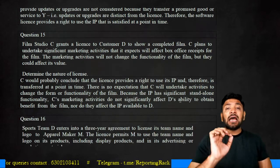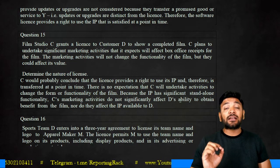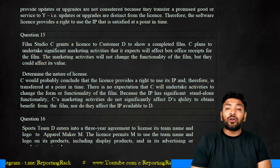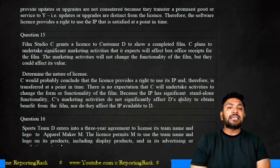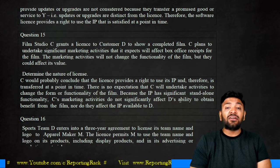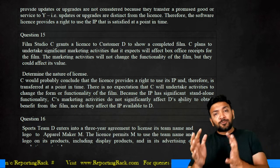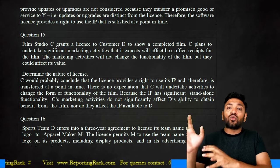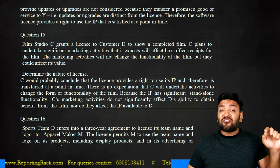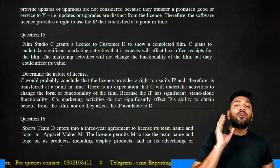Both previous illustrations had revenue recognized at a point of time. Now let's look at revenue recognized over a period of time. Film studio C grants a license to customer D to show a completed film. C plans to undertake significant marketing activities expected to affect the box office receipts. These marketing activities will not change the functionality of the film, but could affect the value.